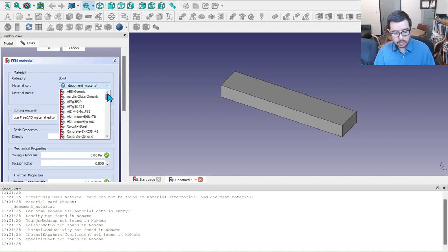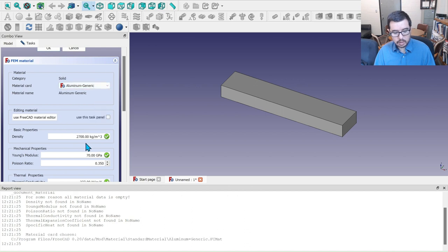And so this one right here, we're going to use aluminum, all the way up at the top, or close to it, aluminum generic. Young's modulus of 70 gigapascals, that sounds familiar, right? And they're using a Poisson's ratio of 0.35, often we use 0.33, but it's in that ballpark. And we hit okay.